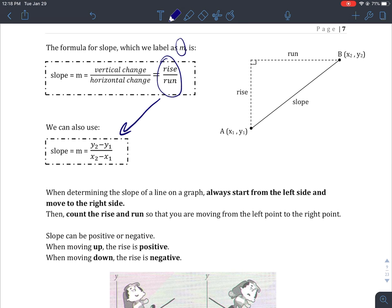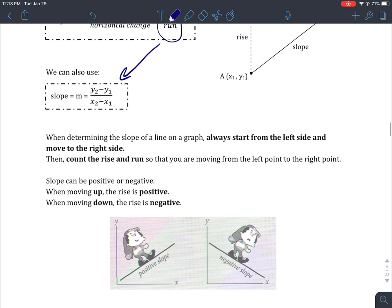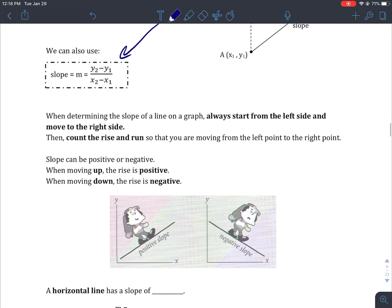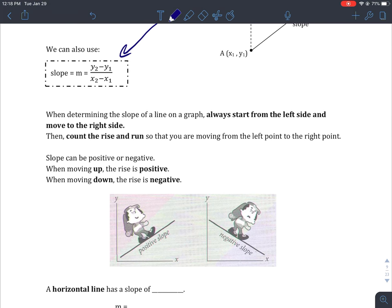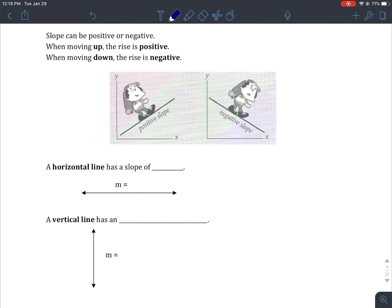When determining the slope of a line on a graph, always start from the left side and move to the right side. Then count the rise and run so that you are moving from the left point to the right point. Just like we read a sentence, we always read from left to right. Slope can be positive or negative. When moving up the hill, slope's positive. When moving down, the rise is negative.